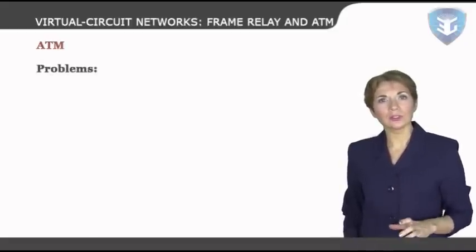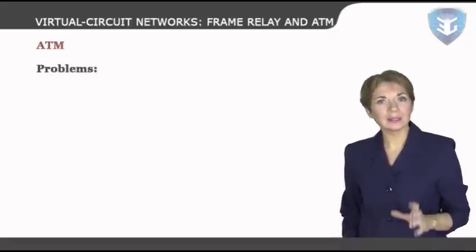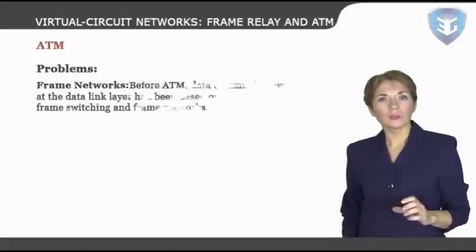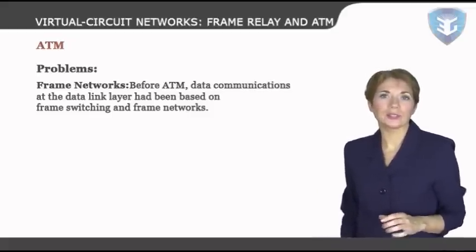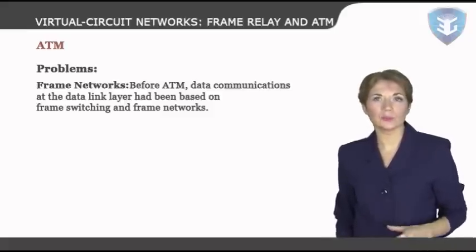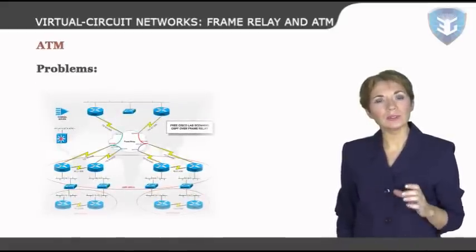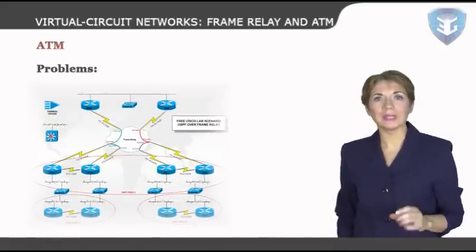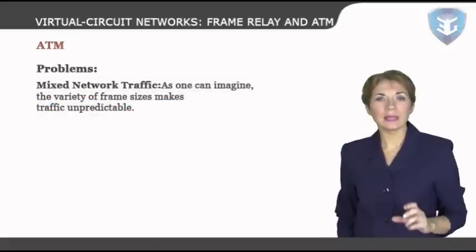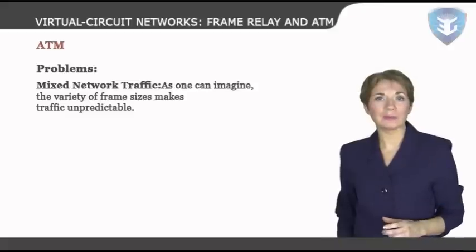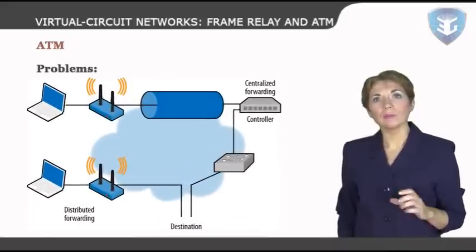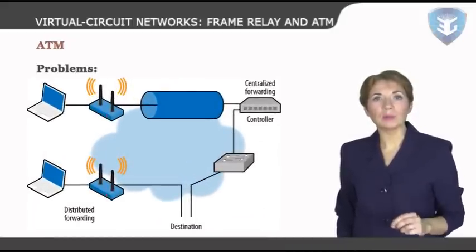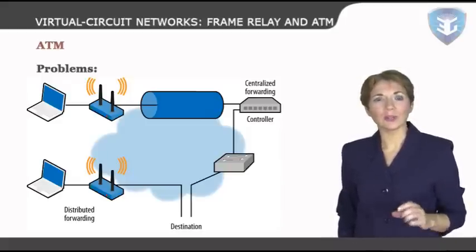Before discussing solutions to design requirements, it is useful to examine problems associated with existing systems. Frame networks: before ATM, data connections at the data link layer had been based on frame switching and frame networks. Different protocols use frames of varying size and intricacy. As networks become more complex, the information carried in the header becomes more extensive. Mixed network traffic: the variety of frame sizes makes traffic unpredictable. Switches, multiplexers, and routers must incorporate elaborate software systems to manage various frame sizes. A great deal of header information must be read and each bit counted and evaluated to ensure the integrity of every frame.